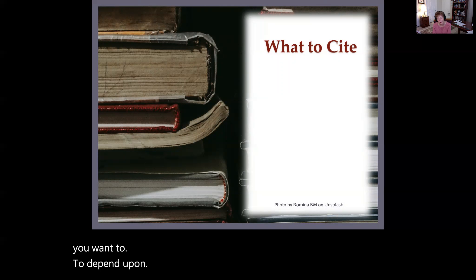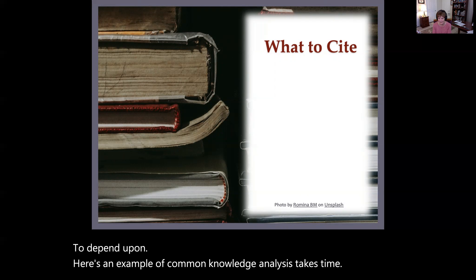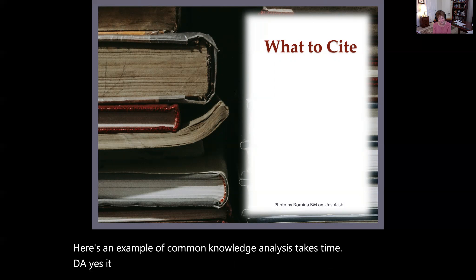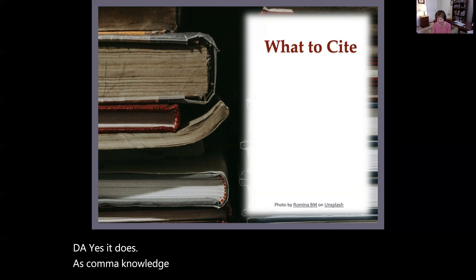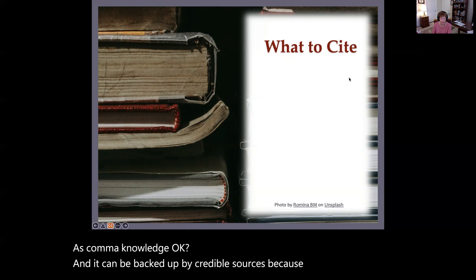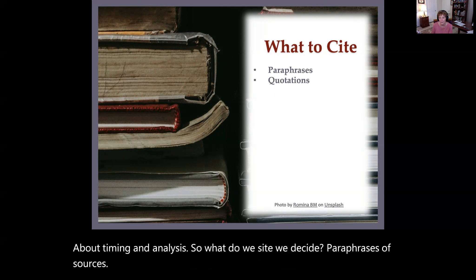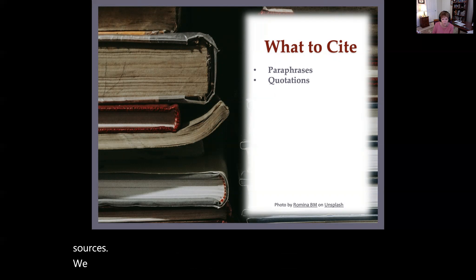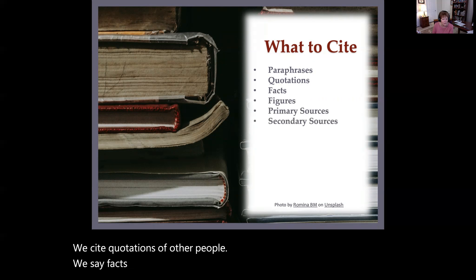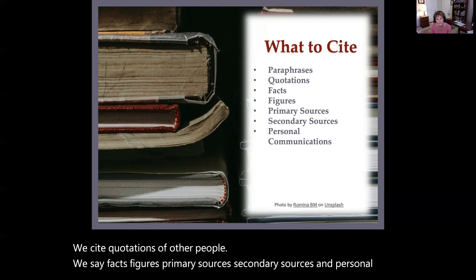Here's an example of common knowledge: 'Analysis takes time.' That's common knowledge, and it can be backed up by credible sources. So what do we cite? We cite paraphrases of sources, quotations of other people, facts, figures, primary sources, secondary sources, and personal communications. When in doubt, cite.